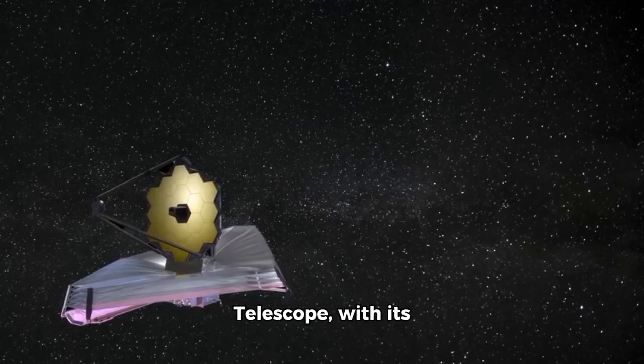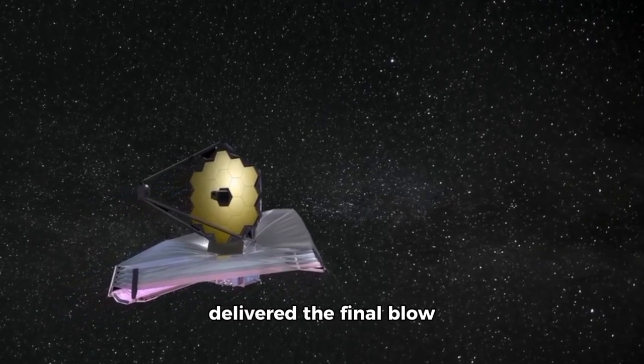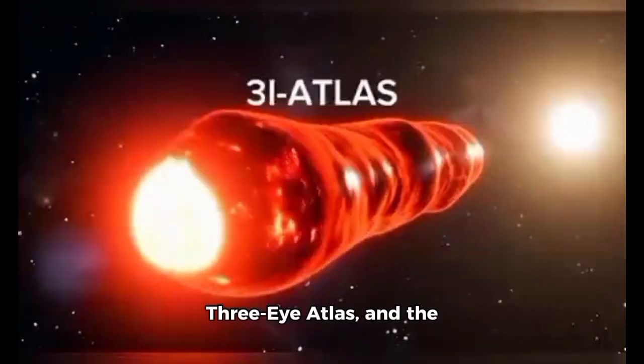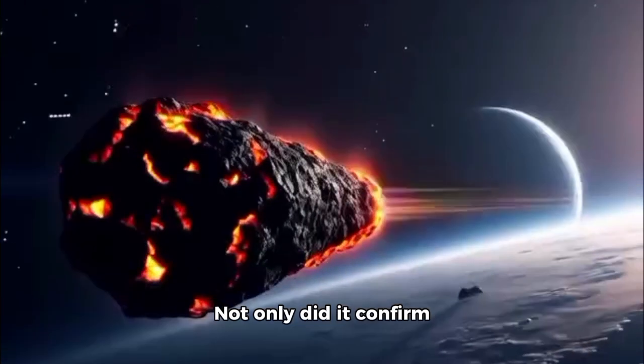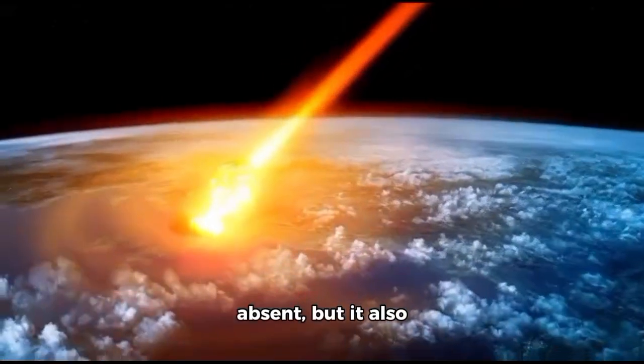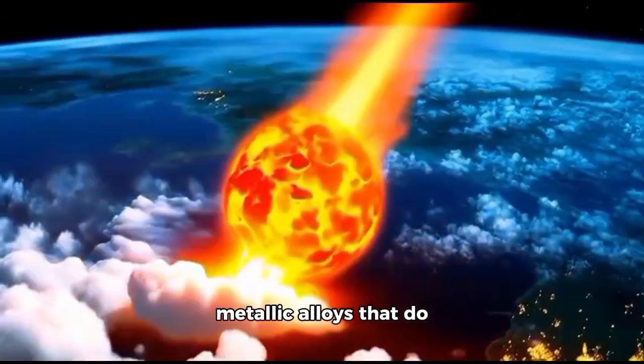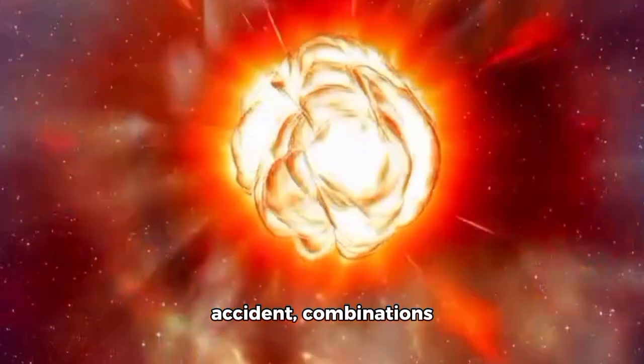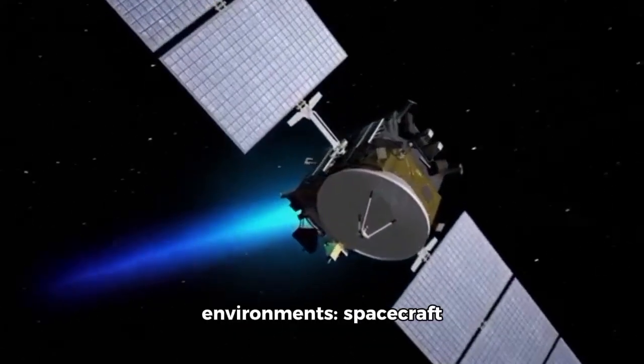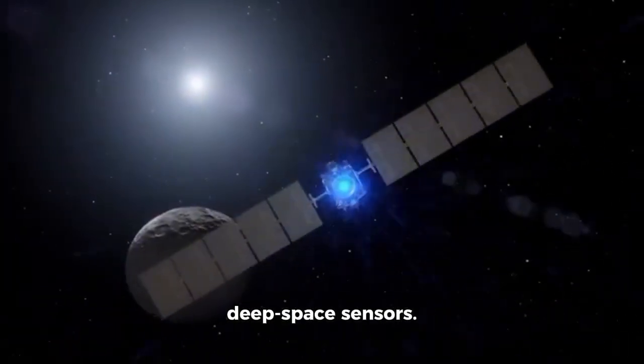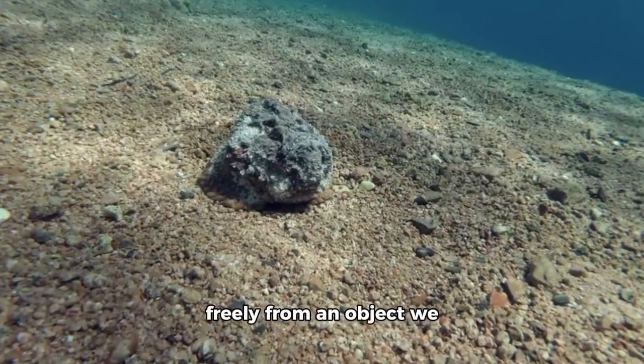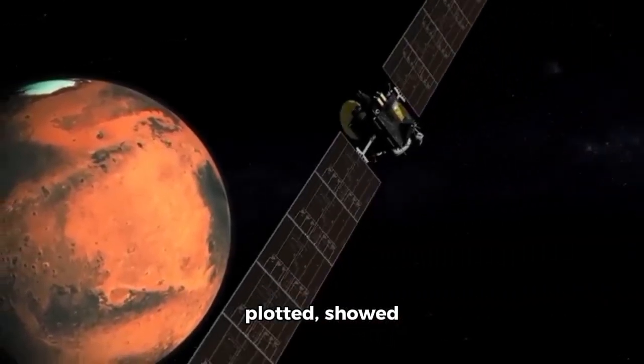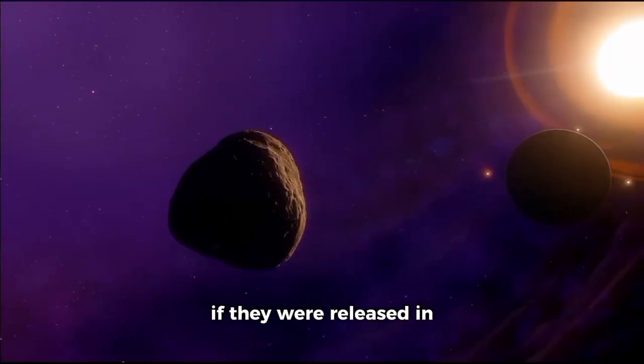The James Webb Space Telescope, with its unmatched infrared eyes, delivered the final blow to conventional theory. Its instruments broke down the spectral fingerprint of 3i Atlas, and the results were stunning. Not only did it confirm that iron was unusually absent, but it also revealed traces of metallic alloys that do not naturally form—alloys with properties that suggest purpose. Not accident, combinations that on Earth would be used in high-stress environments, spacecraft hulls, energy converters, deep space sensors. Yet, they were drifting freely from an object we thought was just a rock. The alloy ratios, when plotted, showed consistency, almost as if they were released in sequences, patterns.